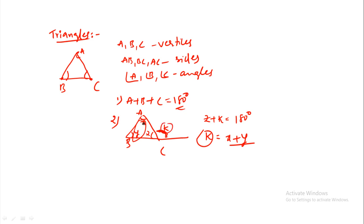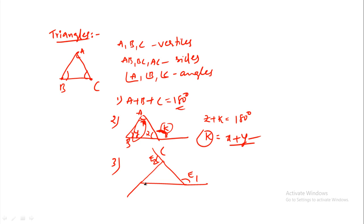The sum of angles x plus k equals x plus y. For a triangle, each exterior angle — e1, e2, e3 — the sum of all exterior angles is always 360 degrees.